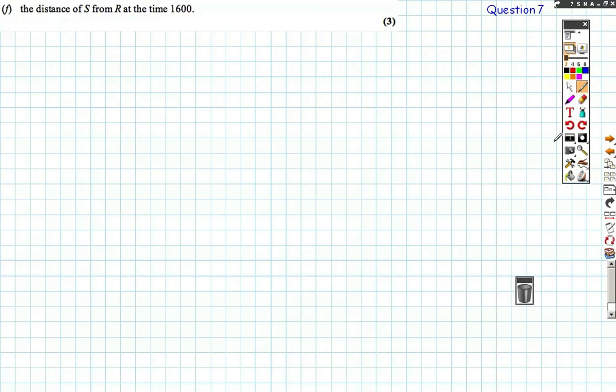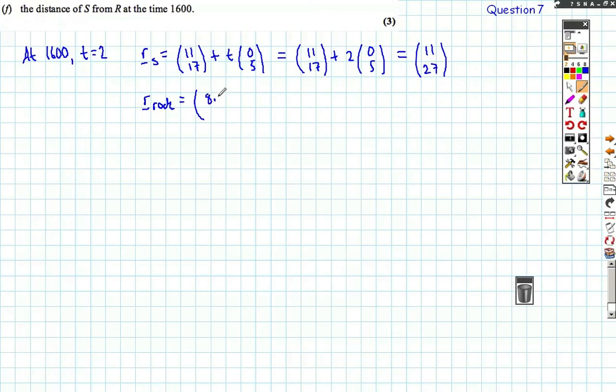One last part of the question to do is a nice three mark question here. Let's find the distance S from R at the time 1600. Well, let's work out where the ship is at 1600. T is 2, not 4, because remember our position vector of the ship works from 2 o'clock onwards. So 2 hours after 2 gives us 4 o'clock. So the position vector equals where it was at 2 plus how it's moving from 2, which is (0, 5), which our position vector is going to be 11 plus, well, it's going to be 11, 17 plus 2 lots of (0, 5). So the position vector equals this. It's going to be 11, which is 2 lots of 0, 17 plus 10 is 27. So at 4 o'clock the ship is at that point. The position vector of the rock, which doesn't move, just remains the same at (8.5, 23).